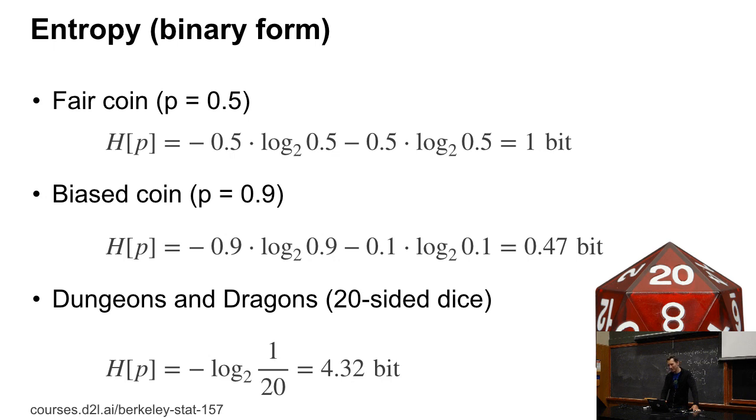But before we do that, let's actually look at a couple of things. Let's take a fair coin. So if I have a fair coin, the entropy of that is one half log base two of one half, then another half log base two of one half, and so that's one bit. And indeed, if I wanted to encode 10 coin tosses on a computer, I could just do that through a bit sequence.